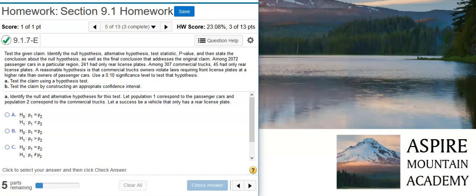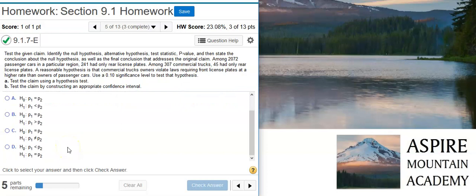Part A, test the claim using a hypothesis test. Part B, test the claim by constructing an appropriate confidence interval. Okay, so part A wants us to conduct a hypothesis test, and the first part asks us for the null and alternative hypotheses. So, here we're going to look at not selecting answer option D because the null hypothesis here is not a statement of equality. Of the three answer options that remain, we need to look at the alternative hypothesis.